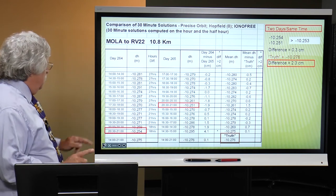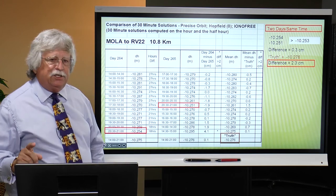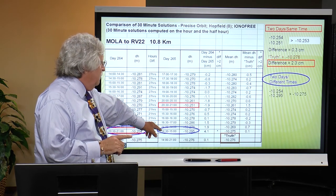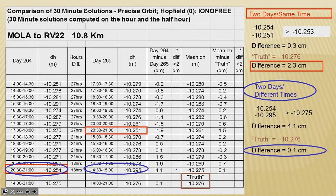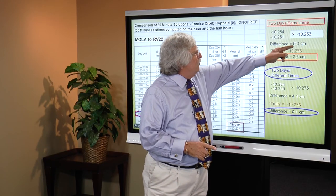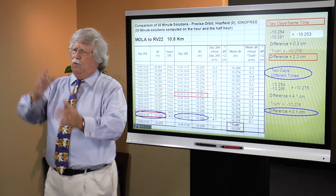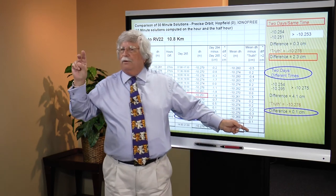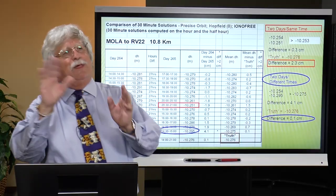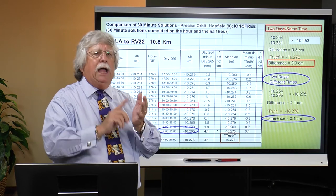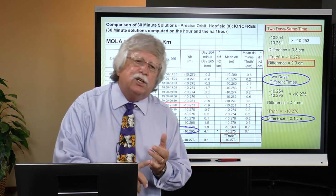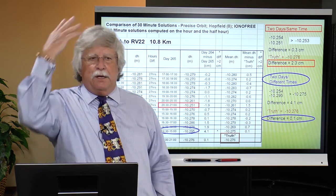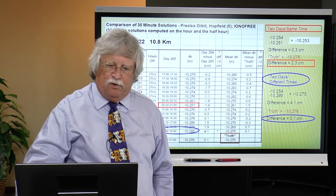Now let's take that same process but change the second session to a time when we have a different constellation of satellites — at least four hours different. The difference between the two sessions has now gone from three millimeters to four centimeters. But look at how the average of those two compares with the truth — one millimeter. The deal is: if you need high quality heights from GNSS, one of the most important field conditions is two separate sessions differing by a minimum of four hours, so you get a completely different constellation of satellites. That's one of the tricks to get higher quality heights.